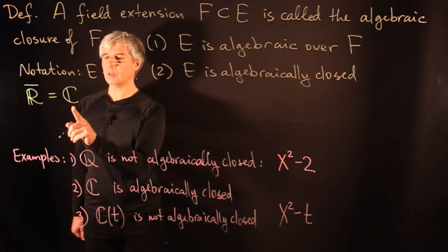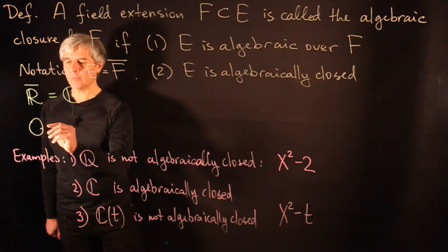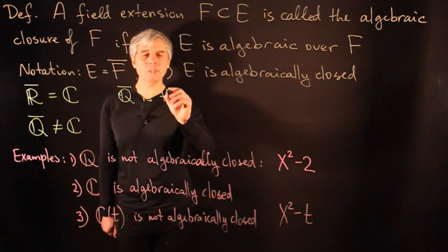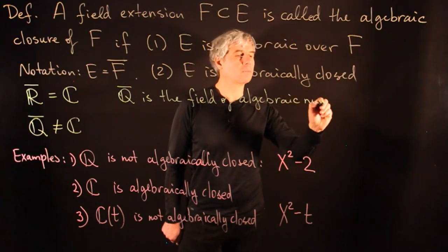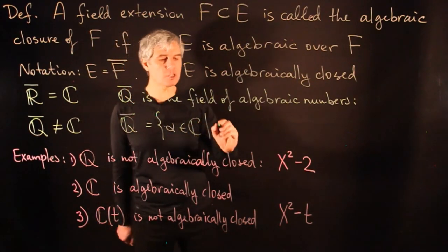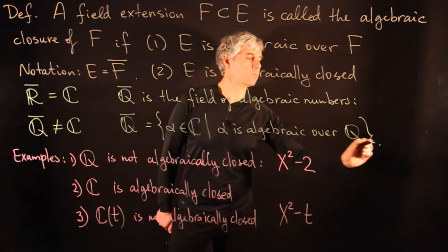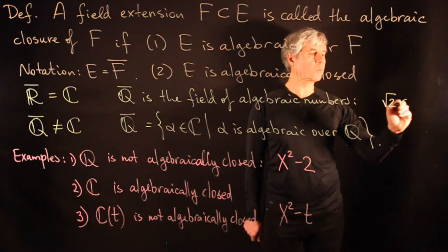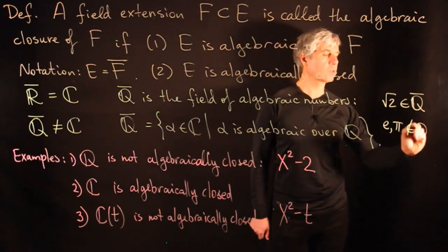The algebraic closure of the field of rational numbers Q̄ is not equal to C. In fact, Q̄ is the field of algebraic numbers — the set of α in C such that α is algebraic over Q. These are complex numbers that are roots of polynomials with rational coefficients. So √2 belongs to this algebraic closure, but e and π are transcendental numbers and do not belong to Q̄.